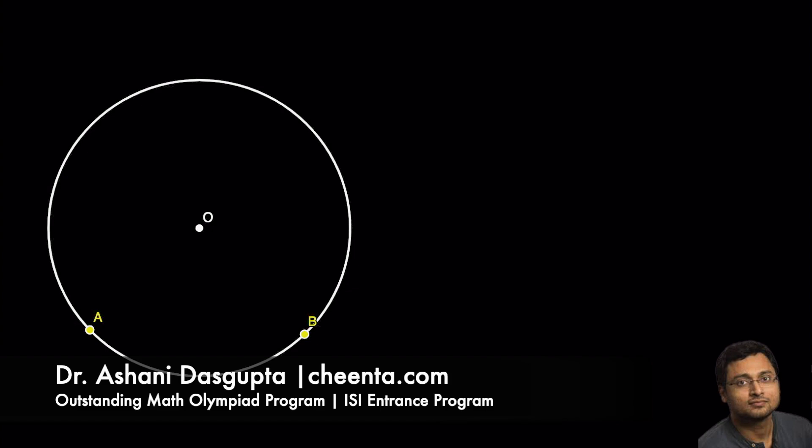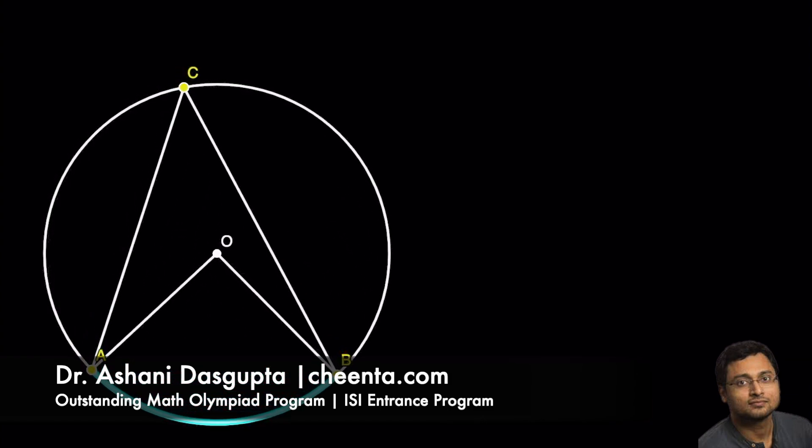Now, if you look at the circular arc AB, it subtends two angles, one at the center, and if you pick any other point on the circumference, let's say C, then one angle at the circumference.